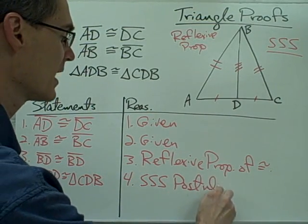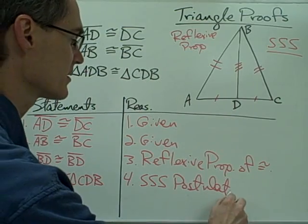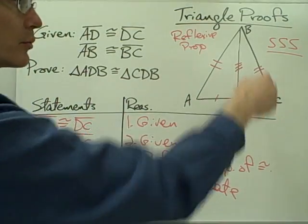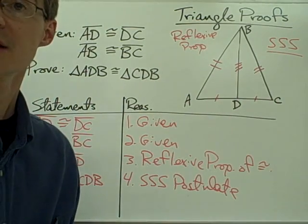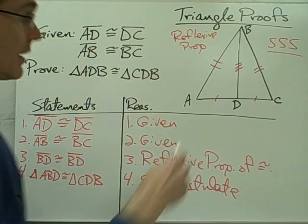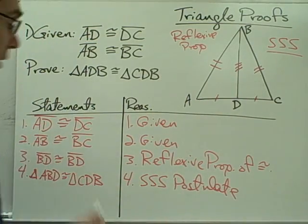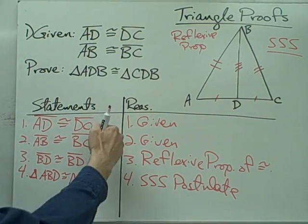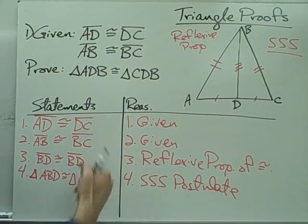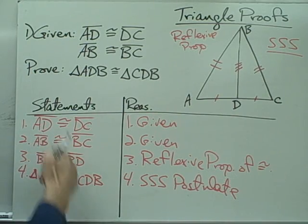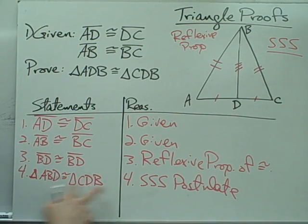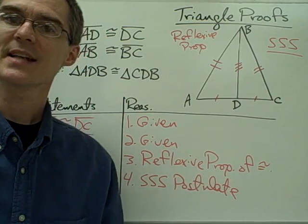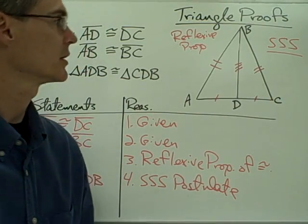The reason I can say those two triangles are congruent is by the side-side-side postulate. The side-side-side postulate says if the three sides of one triangle are congruent to the three sides of another triangle, then those two triangles are congruent — and that's exactly what we have here. We have one, two, three sides of one triangle congruent to three sides of another triangle, therefore those two triangles are congruent by the side-side-side postulate.